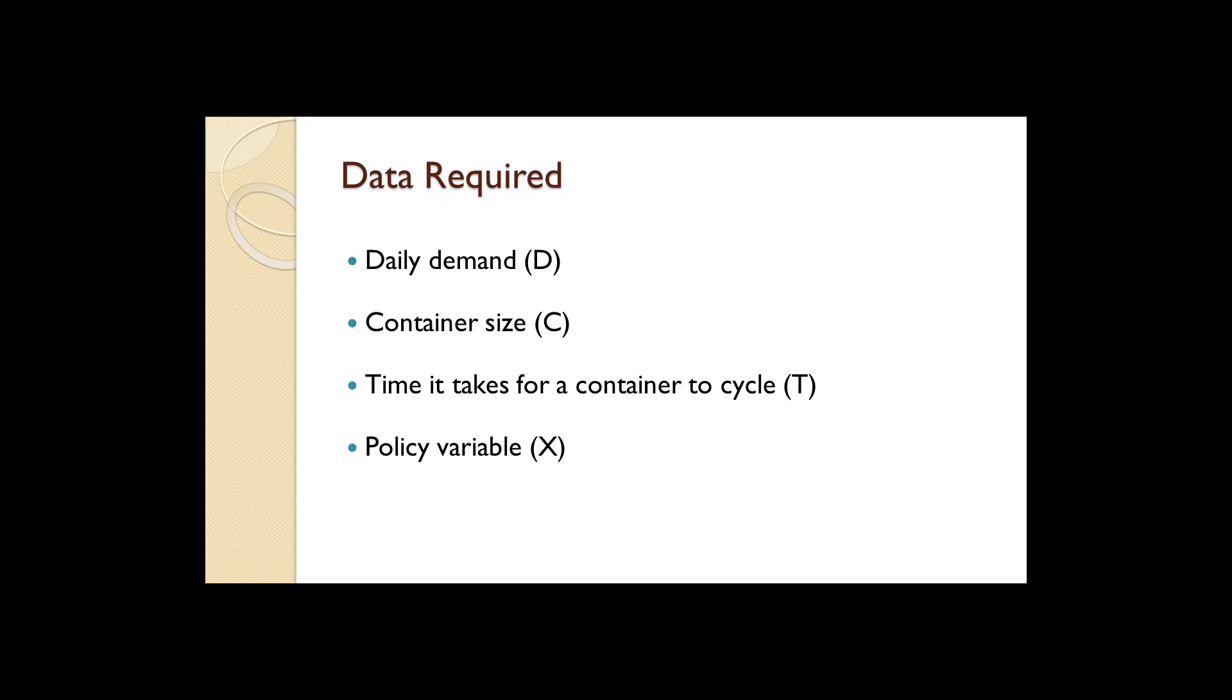Three, the time it takes for a container to move between the source work center and the receiving work center. This is represented by the symbol T. Four, a policy variable X that is used to adjust the number of containers up from the minimum required.